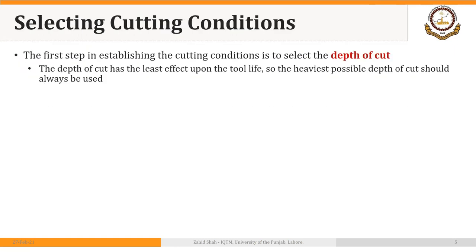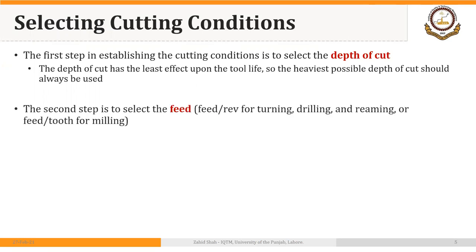The first step in establishing cutting conditions is to select the depth of cut. The depth of cut has the least effect upon tool life, so the heaviest possible depth of cut should always be used. Generally, the depth of cut is high for roughing operations and reduced for finishing operations. The second step is to select the feed — generally feed per revolution for turning, drilling, and reaming, or feed per tooth for milling.